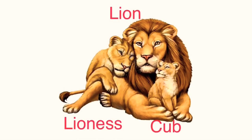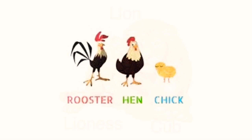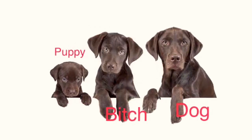Today we are going to learn about animal family names. Let's get started. This is lion, lioness, and cub. The next family is rooster, hen, chick. Next family: dog, bitch, puppy.